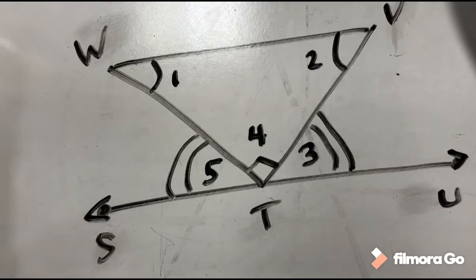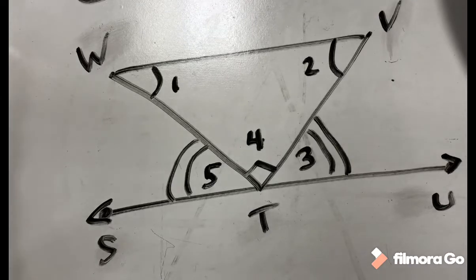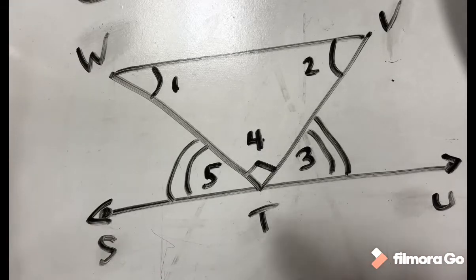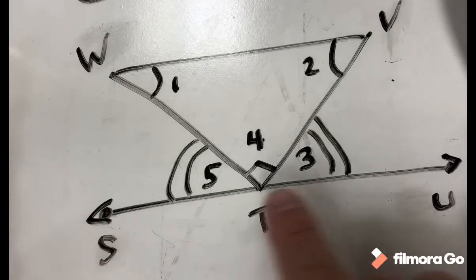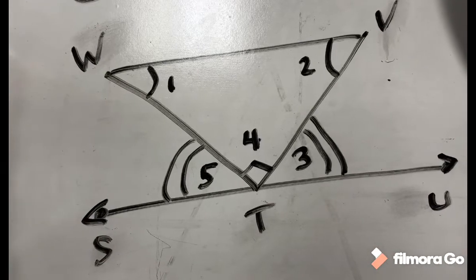Question 3: name a group of collinear points. Name three points that would be collinear. The points that would be collinear are S, T, and U. The reason is they make a straight line, so because they're on a straight line they would be collinear.